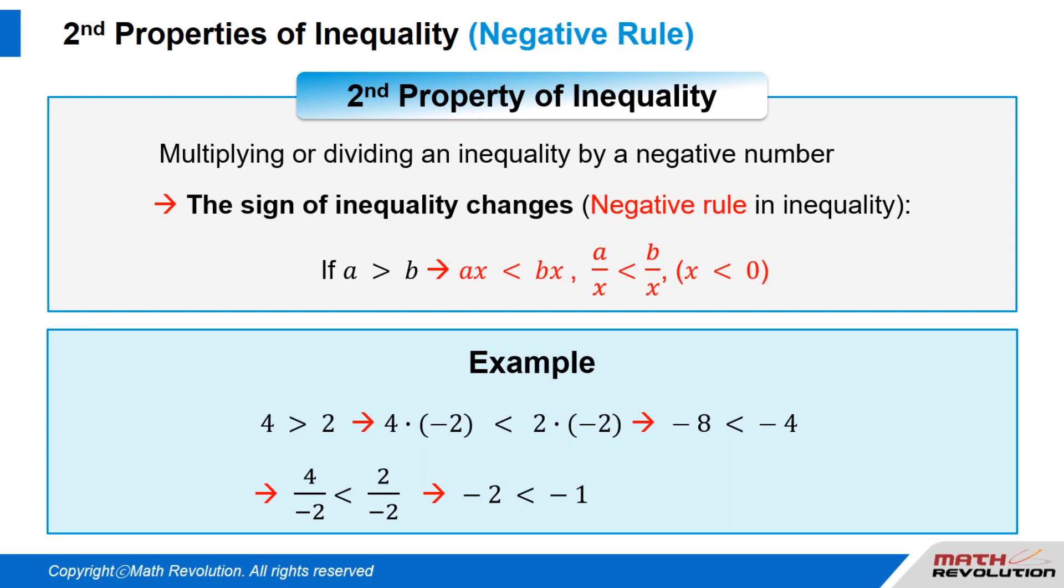When we divide both sides by negative 2, we get 4 over negative 2 is less than 2 over negative 2, or negative 2 is less than negative 1. Thus, the inequality sign changes.